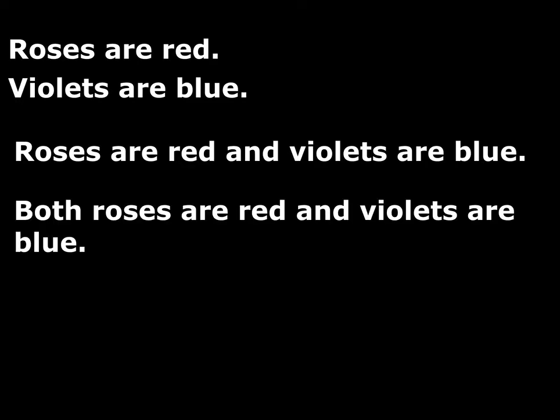So if we take the following two atomic statements: roses are red, violets are blue. There's a lot of ways in English that these could be expressed as a conjunction. We can just use 'and': roses are red and violets are blue. Sometimes we can say 'both X and Y': both roses are red and violets are blue.